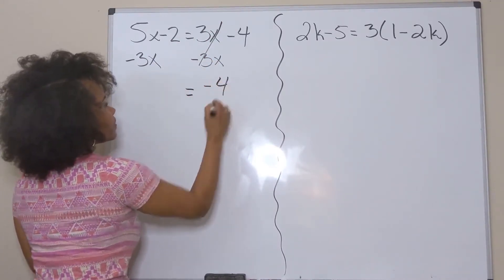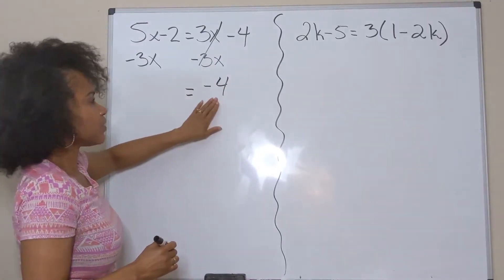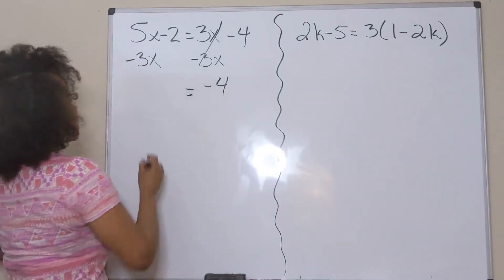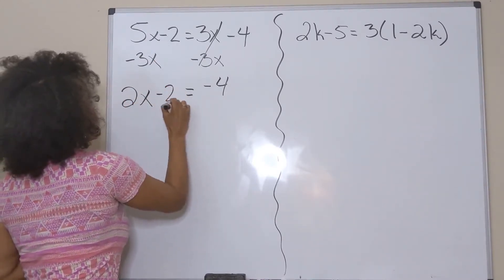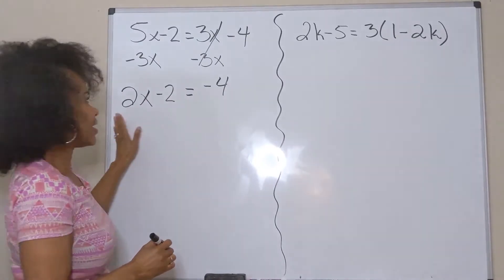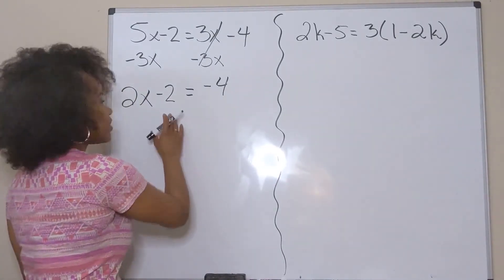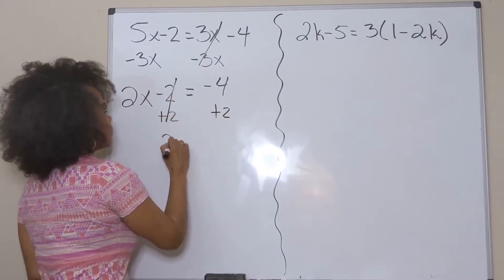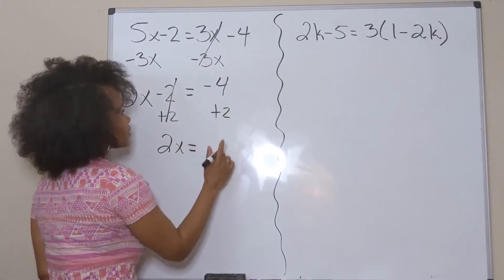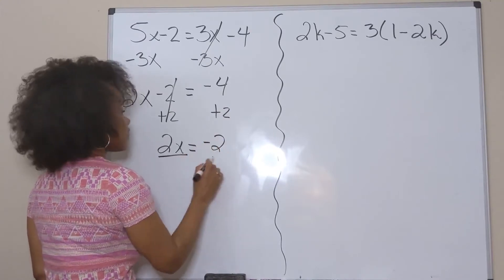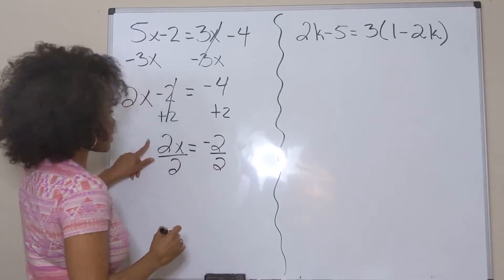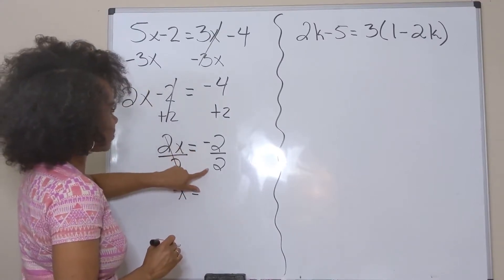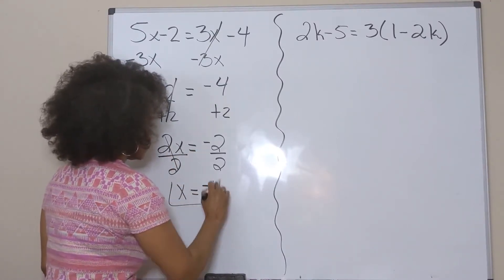Bring down the negative 4 since I didn't use it — remember minus and negative are the same. Combining 5x minus 3x gives me 2x, and I bring down the negative 2. Now this looks like a basic two-step equation: add 2 to both sides, giving 2x equals negative 2, then divide both sides by 2. That gives x equals negative 1.